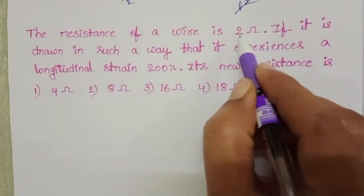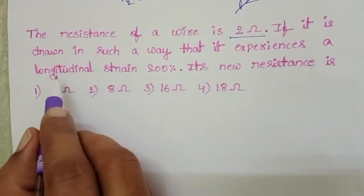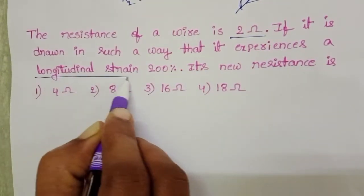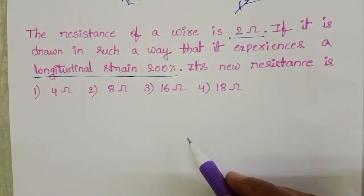The resistance of a wire is 2 ohm. If it is drawn in such a way that it experiences a longitudinal strain 200%, its new resistance is